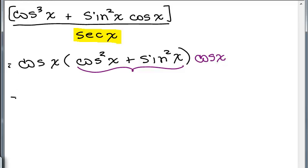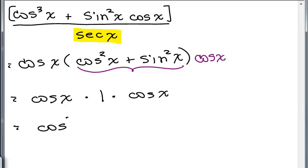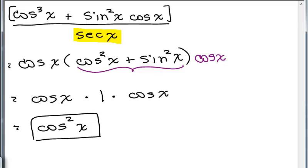So we really just have cosine X times 1 times cosine X, which is just cosine squared X. You might approach this slightly differently, but that's about as simplified as we can get.